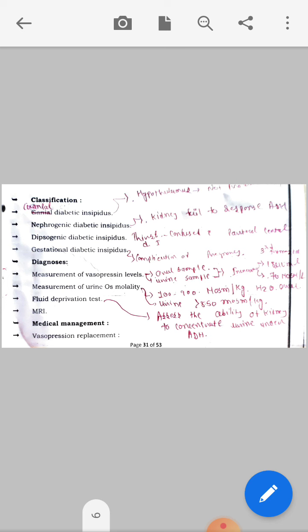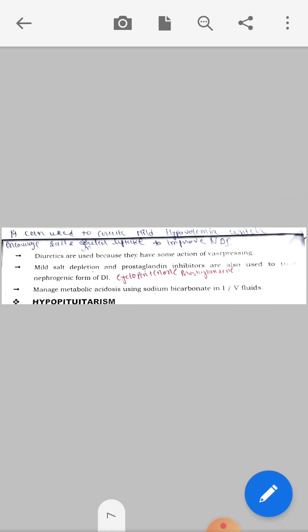Medical management: First one is vasopressin replacement. It can be used to treat mild hypovolemia, encouraging salt injection and protein uptake to increase NDI. Diuretics are used because they have some action of vasopressin. Diuretic therapy is given for mild salt depletion. Prostaglandin inhibitors are also used to treat nephrogenic form of diabetes insipidus.